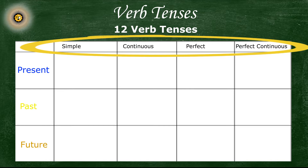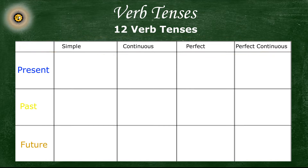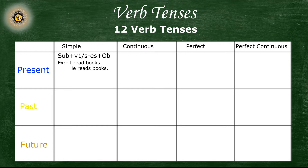All right, now let's discuss all of these verb tenses, their sentence structure, and example sentences. First, the present tense — let's talk about the simple present tense. The sentence structure for simple present tense is: subject plus first form of verb plus object. Also with first or third person singular, we add 's' or 'es' to the verb. The example sentence is: 'I read books' or 'He reads books'.